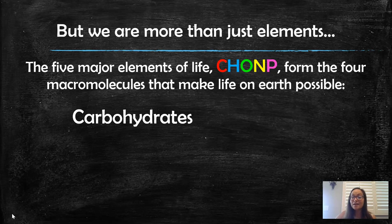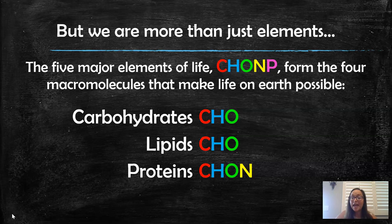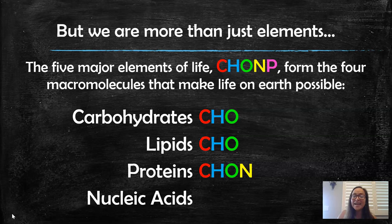Carbohydrates are made of carbon, hydrogen, and oxygen. Lipids are made of carbon, hydrogen, and oxygen. Proteins are made of carbon, hydrogen, oxygen, and nitrogen — and there are two amino acids that have sulfur, but sulfur isn't listed because it's not in all amino acids; the main elements are C, H, O, N. And nucleic acids, which are DNA and RNA, add phosphorus: carbon, hydrogen, oxygen, nitrogen, and phosphorus.